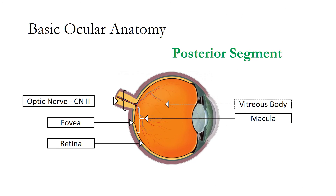The major components of the back or posterior pole of the eye are identified in this slide. The vitreous body can be imagined as a clear jelly-like substance filling up the space between the lens and the retina. The retina is a thin, membranous lining of the rear two-thirds of the eye which is subdivided into the macula and fovea. The optic nerve is like an HDMI cable that transmits the image generated by the retina to the visual cortex of the brain.